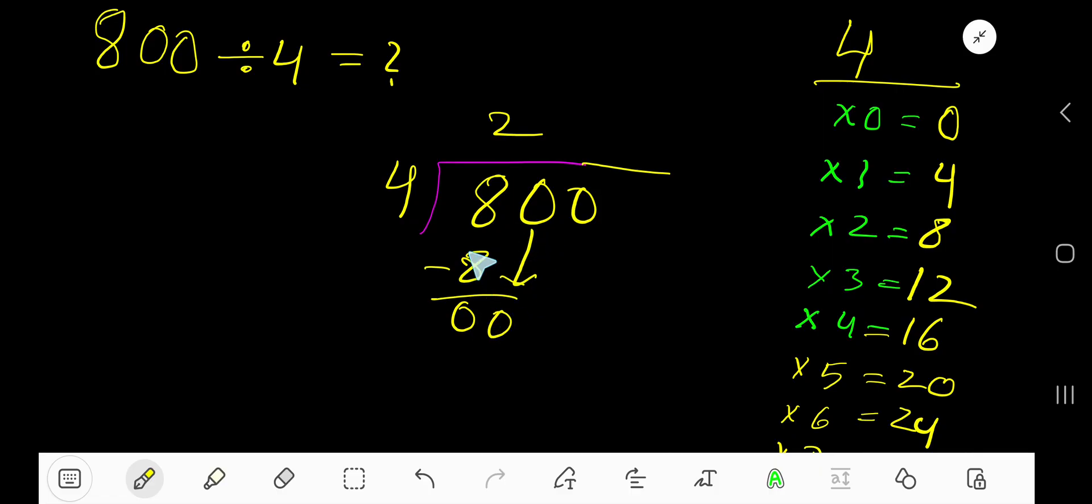Bring down this 0. Now 4 goes into this 0 how many times? 4 goes into this 0 actually 0 times. 0 times 4, 0. Subtract 0.